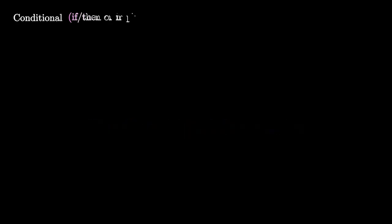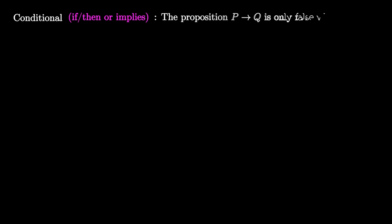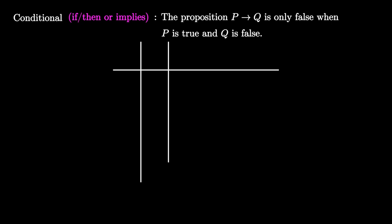To understand the Wason selection task, let's first investigate the conditional logical connective. Recall that we define logical connectives in terms of their truth table. The conditional connective, read as 'p implies q', is only false when p is true and q is false. So the truth table looks like this.